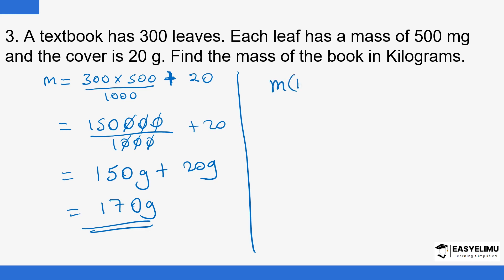Now mass in kilograms should be equal to mass in grams divided by 1,000. Mass in grams is 170. You divide this by 1,000. Again, the decimal point will move to the left three steps. That is 0.17 kilograms. That is how we go about this, that is how you are able to find the mass.